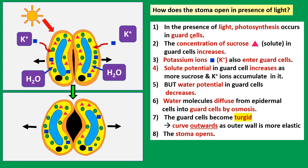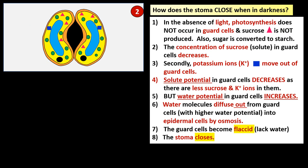In summary, in the presence of light, photosynthesis occurs in the guard cells producing sucrose, and potassium ions enter the guard cells by active transport. These increase the solute potential in the guard cells, while water potential decreases. Water then diffuses into the guard cells by osmosis — note that when potassium ions move into the guard cells, water also moves in. The guard cells become turgid, curve outwards, and the stoma opens.